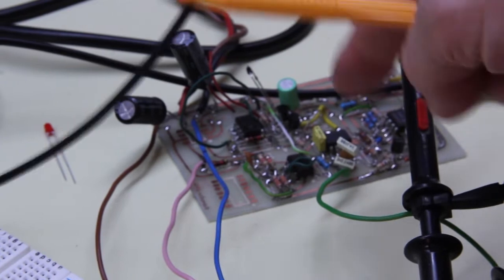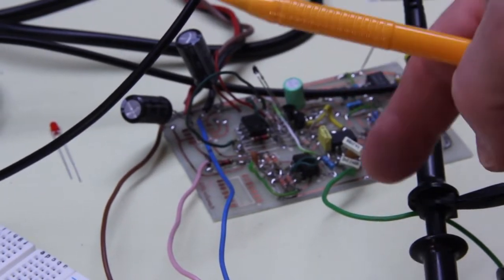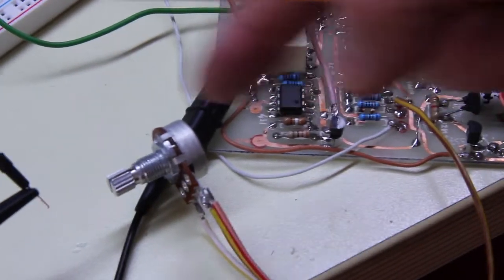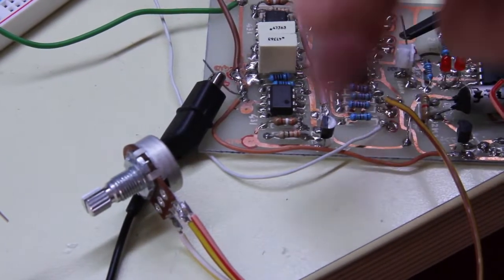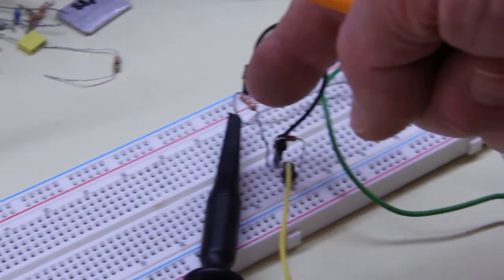Here we have the oscillator that we have seen in the previous episode that generates the triangular waveform that comes to an amplifier and a potentiometer that allows to adjust the amplitude of the signal, and the output of the amplifier goes to this series.